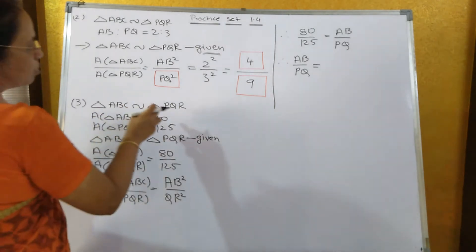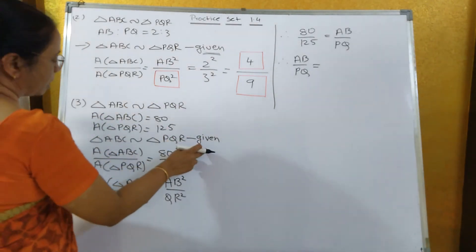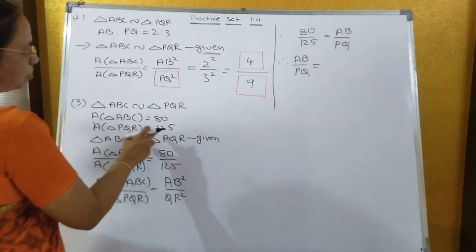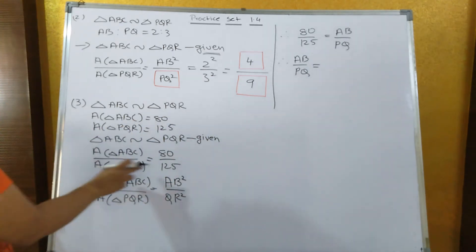Again, triangle ABC similar to triangle PQR, it is already given. And area of triangle ABC is equal to 80 and area of triangle PQR is equal to 125, that is already given.